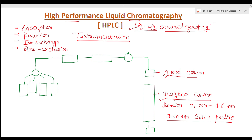Now, what is the use of the guard column and why are we using it? There are two problems in HPLC that can shorten the lifetime of the analytical column. First, the solute can bind to the stationary phase irreversibly, degrading the column's performance and decreasing the availability of the stationary phase. Second, particulate material injected with the sample can clog the analytical column.